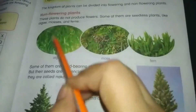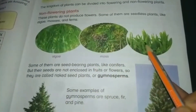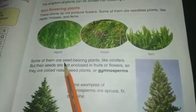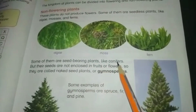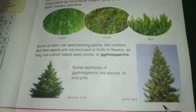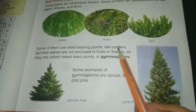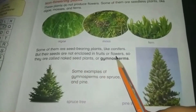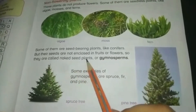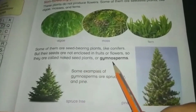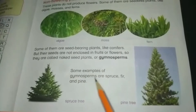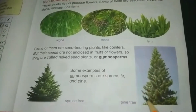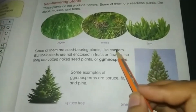These are non-flowering plants and they do not produce seeds. Some of them are seed-bearing plants, meaning they produce seeds, like conifers. But their seeds are not enclosed in fruits or flowers. Some examples of gymnosperms are cypress and pine. Pine is basically an example of a conifer plant.